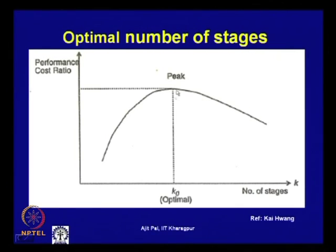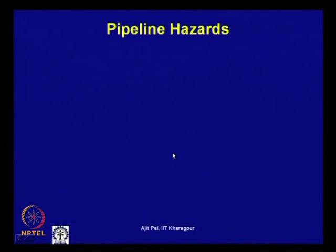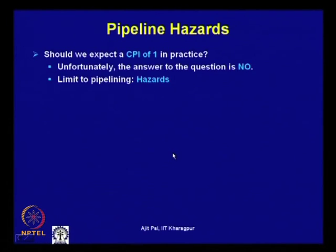Modern processors try to find this optimal number of stages, increasing them as much as feasible, but there is an upper limit beyond which it is not feasible. Resource requirements keep increasing as k increases. Today we focus on pipeline hazards. The question arises: should we expect a CPI of 1 in practice?